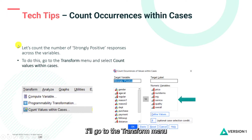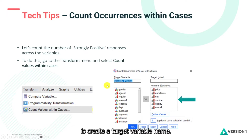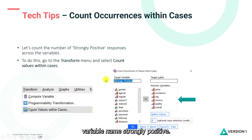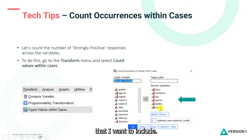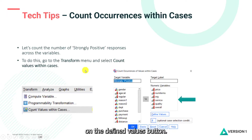To get started, go to the Transform menu — you can see it here — and select 'Count Values Within Cases.' Then you'll need to create a target variable name; here I'm going to call it 'strongly positive.' Then select the questions you want to include — these are the six questions, all measured on the same scale, one to five.